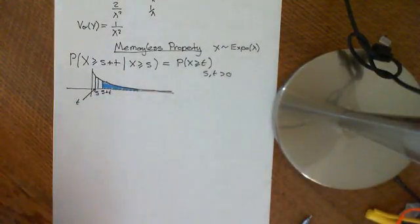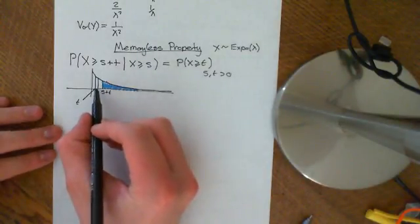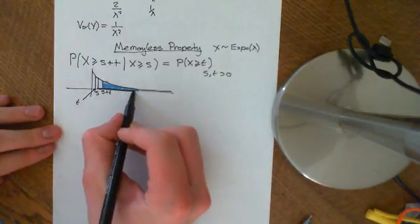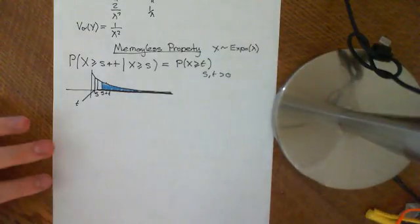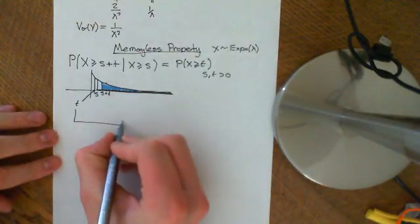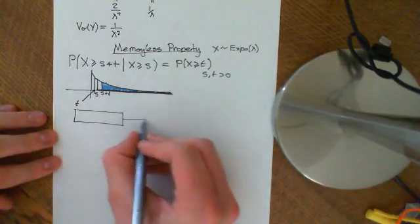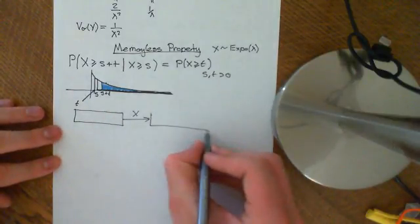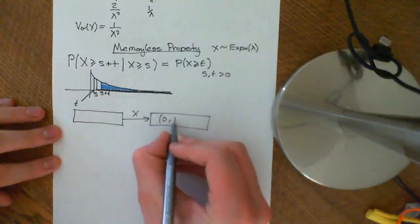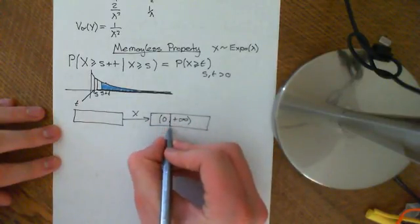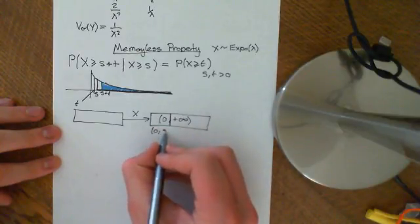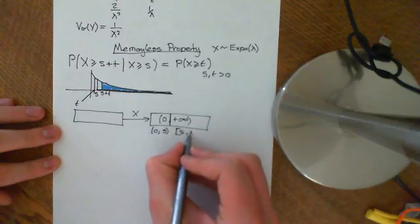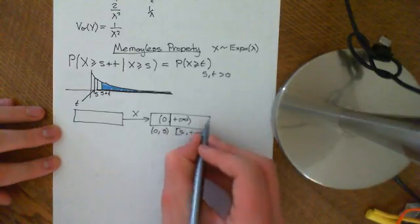We're doing conditional probability — we're saying restrict the domain down to the numbers that are greater than or equal to s. We started off with an abstract probability space being mapped by our random variable onto the positive real numbers, zero to plus infinity. Now we're saying: cut this up, do away with the bit zero to s, and keep the bit s to plus infinity.